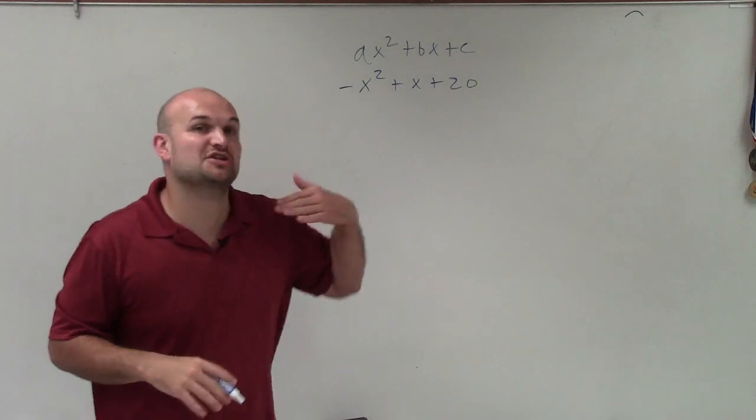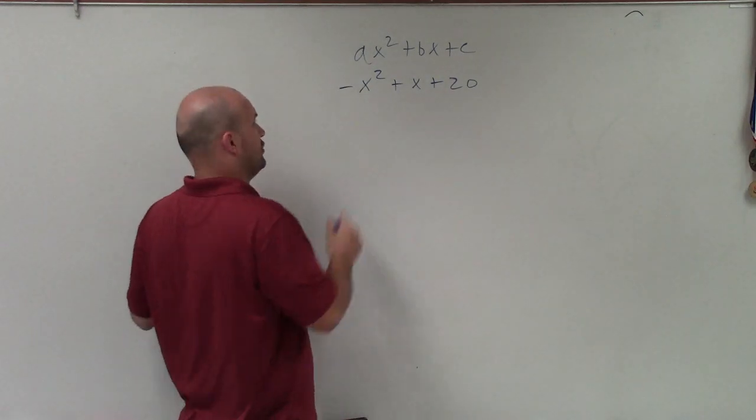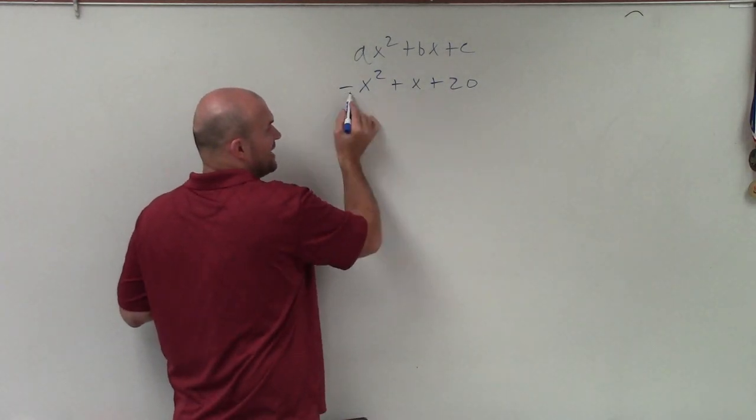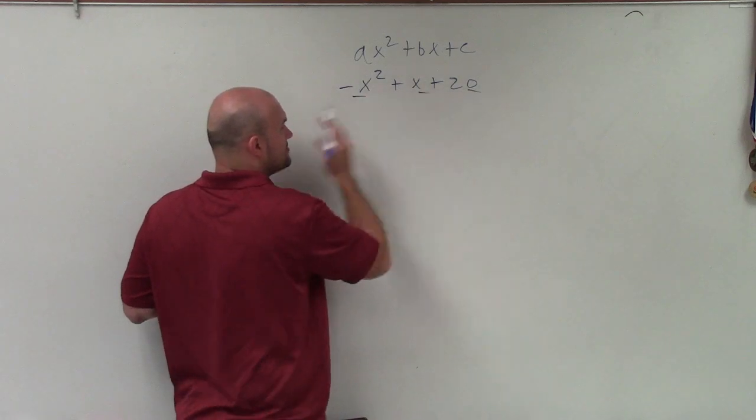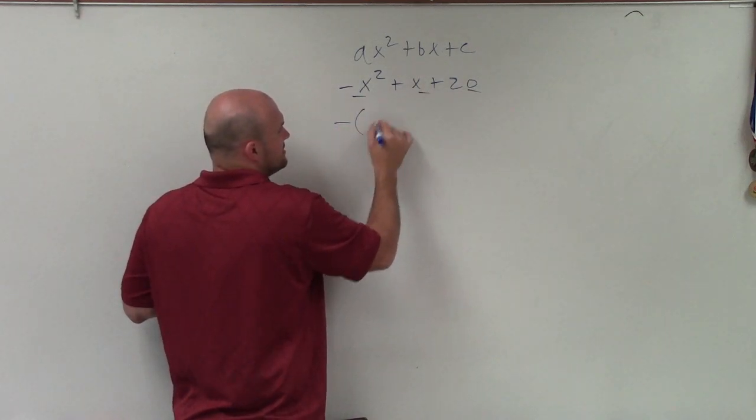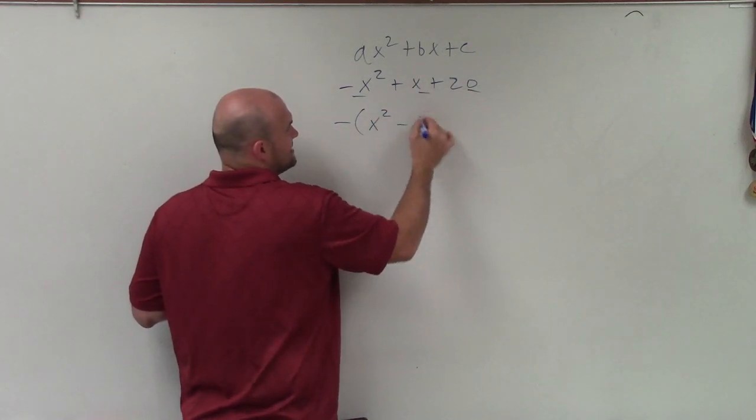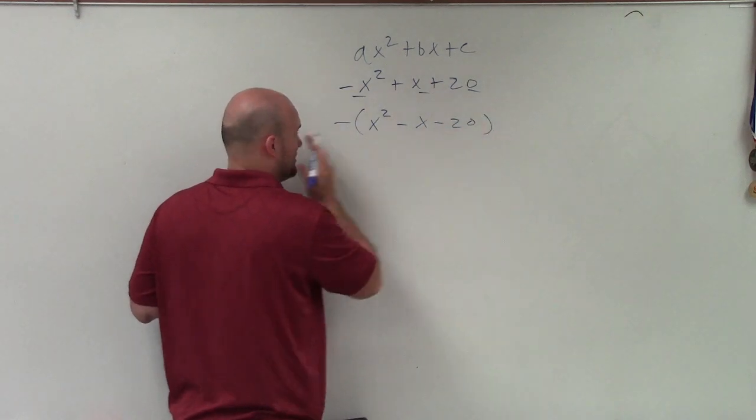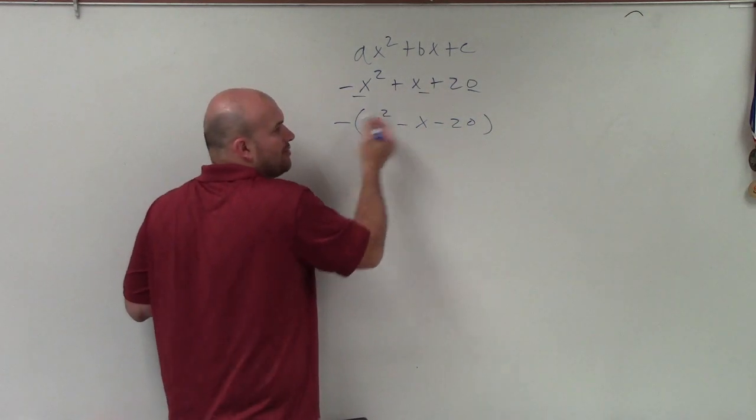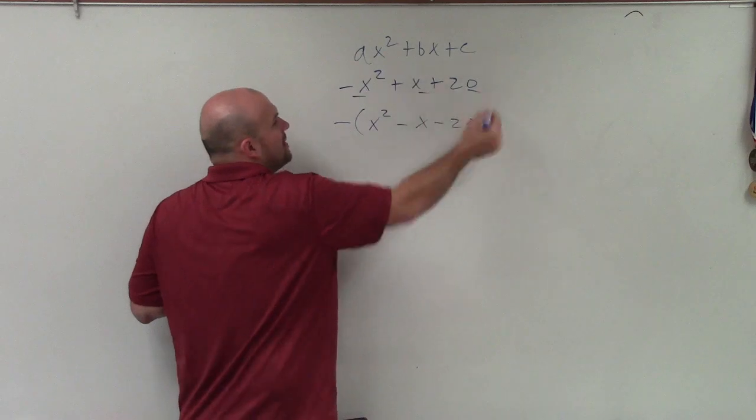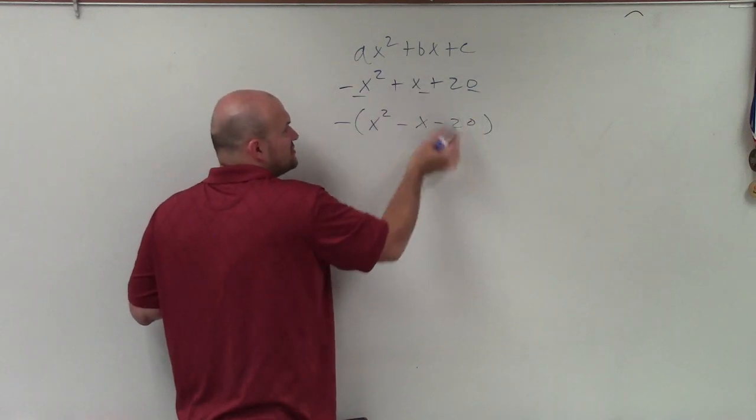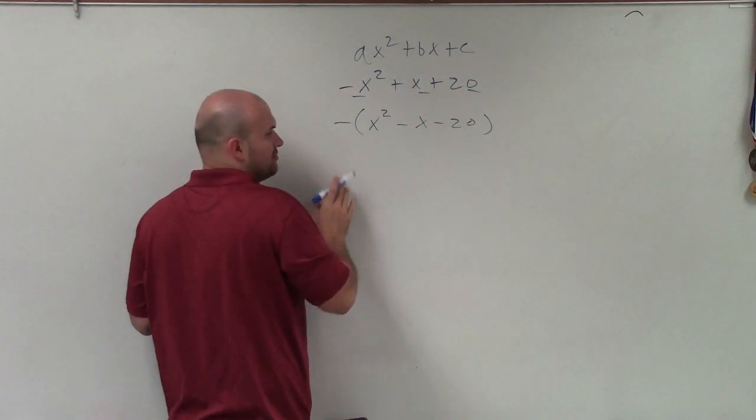So what I'm going to do in this case is actually factor out a negative 1 out of all the terms. So if I divide out a negative 1 from each one of my terms, I now will have negative times x squared minus x minus 20. You can see you can go back and apply distributive property, multiply this negative 1 times each of these terms, and get back to our original problem.